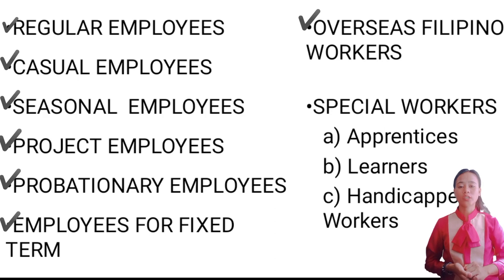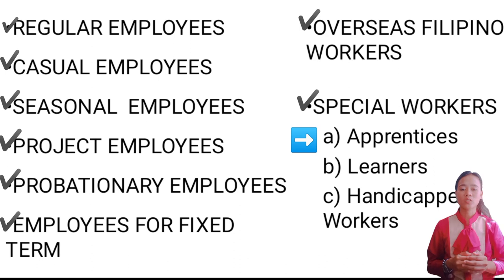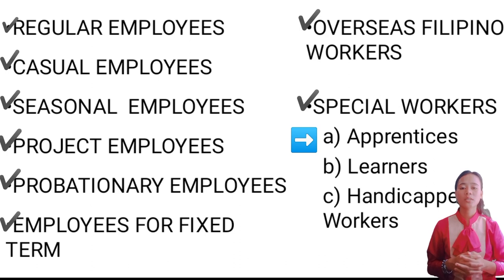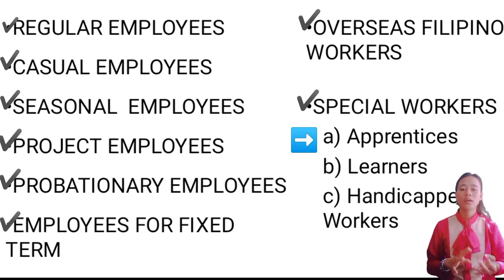The eighth is special workers, which include apprentices, learners, and handicapped workers. An apprentice is an individual who undergoes a period of training and learning in a specific trade, profession, or skill set under the guidance and supervision of a skilled mentor or employer. Apprenticeships are structured programs that combine on-the-job training with classroom instruction, allowing individuals to acquire practical experience and theoretical knowledge. They are typically offered in industries such as construction, manufacturing, engineering, healthcare, information technology, culinary arts, and more.